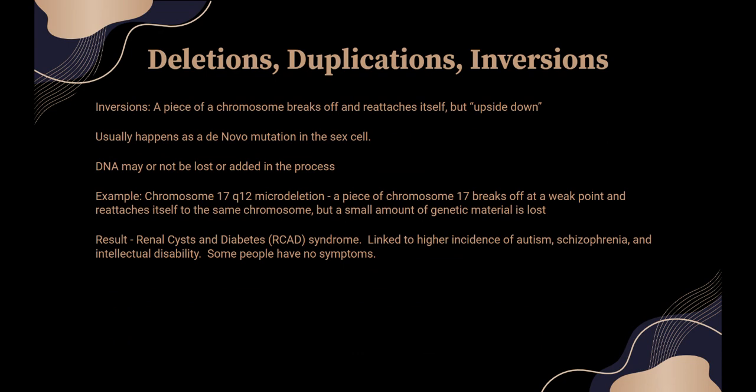Inversions mean a piece of chromosome breaks off and reattaches itself upside down. It usually happens as a de novo mutation in the sex cell. Sometimes DNA is lost when it breaks off into little fragments, and sometimes it can pick up DNA from another chromosome. An example is chromosome 17q12 — a little piece of chromosome 17 breaks off at a weak point and reattaches to the same chromosome, but in that process a little bit of genetic material was lost, causing a microdeletion. This results in RCAD — renal cysts and diabetes syndrome — and those people also have a higher incidence of autism, schizophrenia, and intellectual disability, with some people having none of those symptoms depending on how much function is lost.